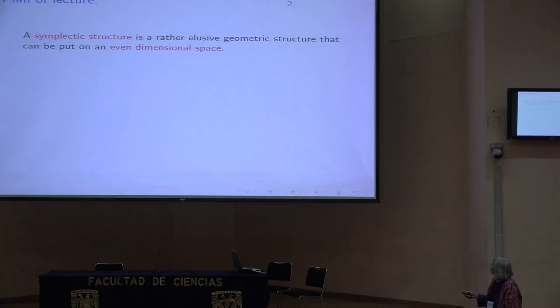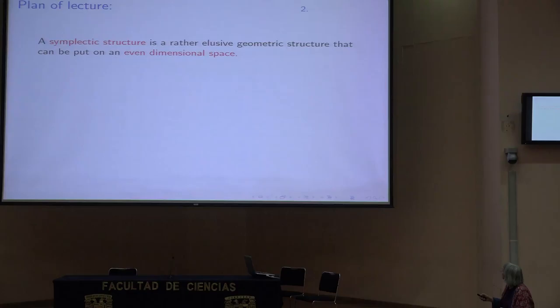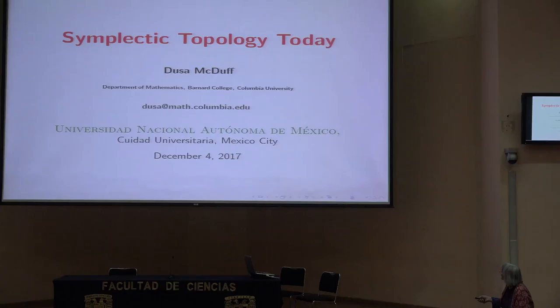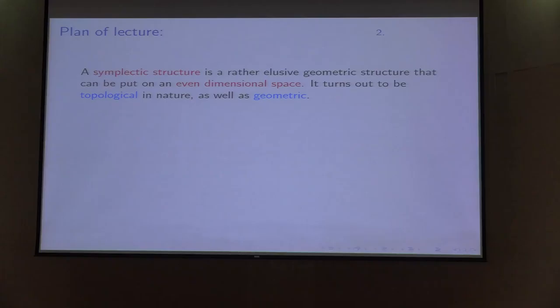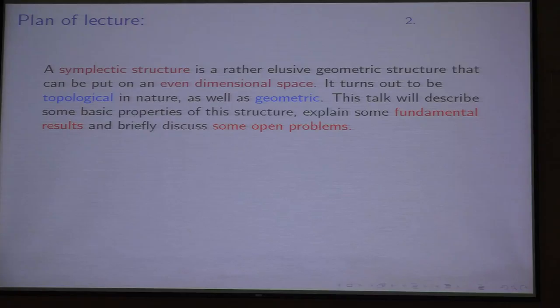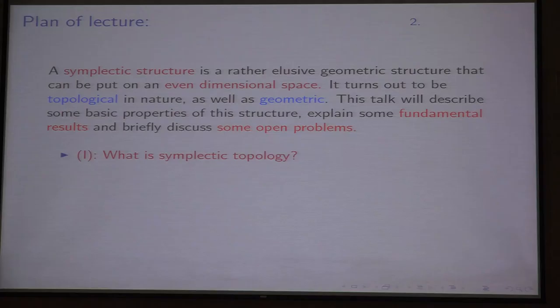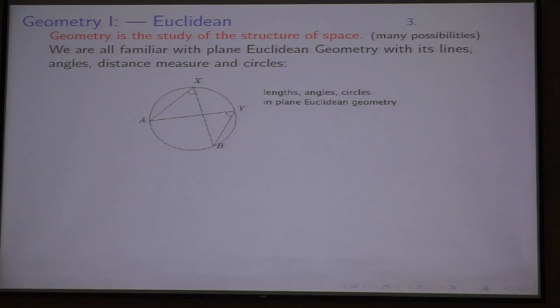I'm going to give a very general talk about symplectic structures. I think they're a rather elusive geometric structure that can be put on an even-dimensional space. Although it's a geometric structure, it seems to be topological in nature as well as geometric, so I would like to try and explain that. I'm going to talk about some basic properties, some fundamental results, and briefly discuss some open problems. Here's a rough outline: what is symplectic topology, some fundamental results, and some open questions.